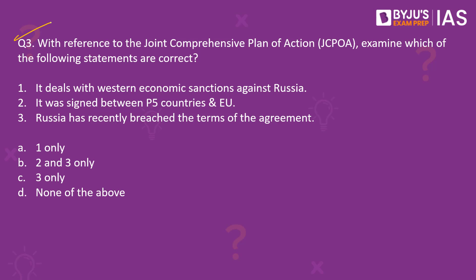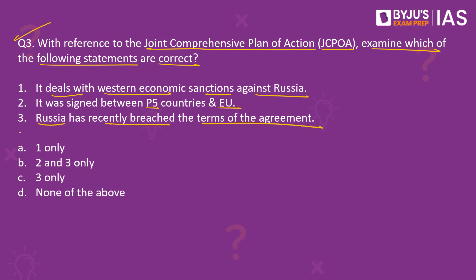Now let's look at the third question. With reference to the Joint Comprehensive Plan of Action, or JCPOA, which of the following statements are correct? First, it deals with Western economic sanctions against Russia. Second, it was signed between P5 countries and the European Union. Third, Russia has recently breached the terms of the agreement. All three given statements are incorrect, so option D is the right answer.